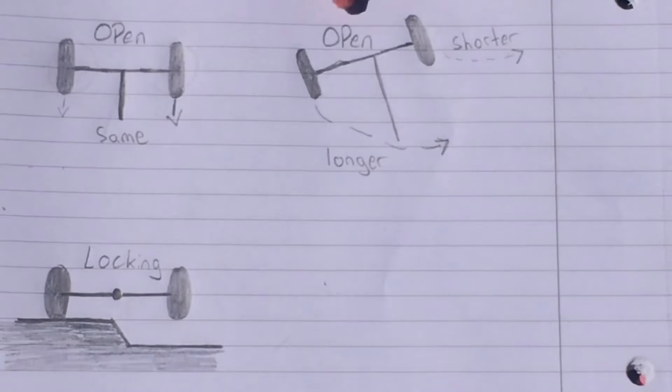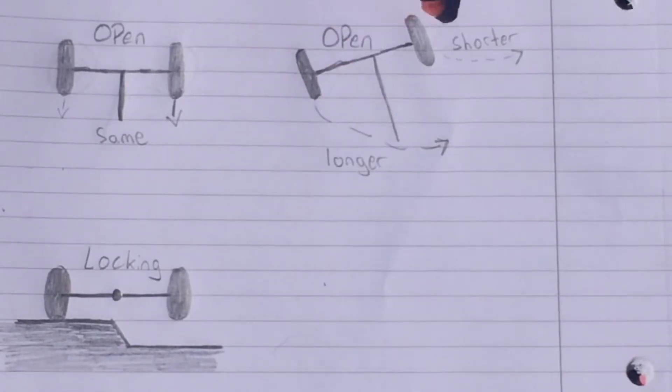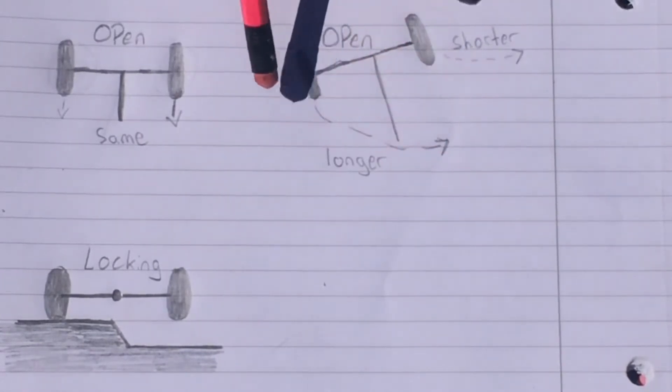This wheel here is actually going to turn less of a distance than your farther one. So this one's going to take longer. That's why you want it to be an open differential most of the time.